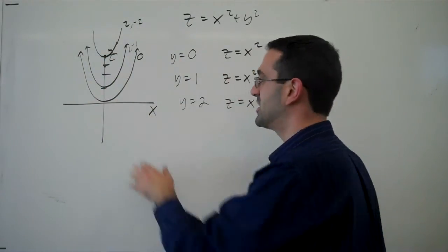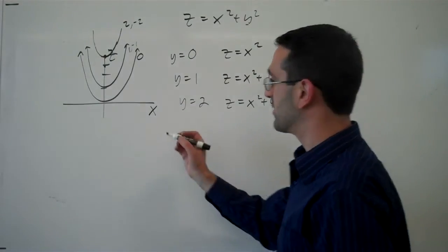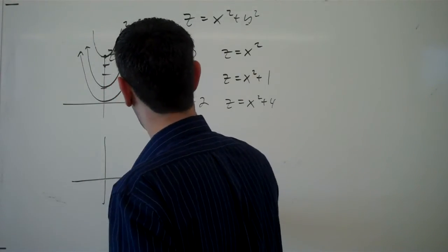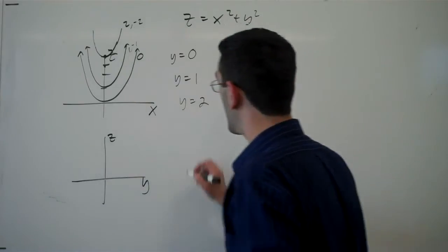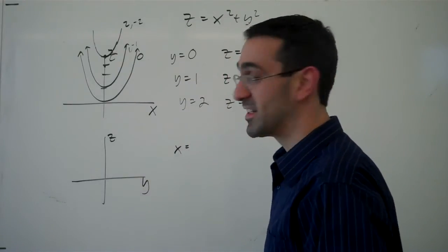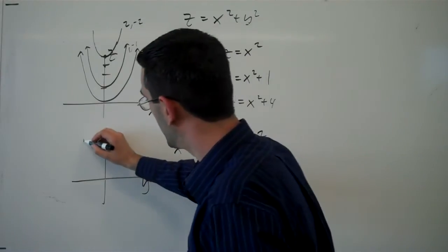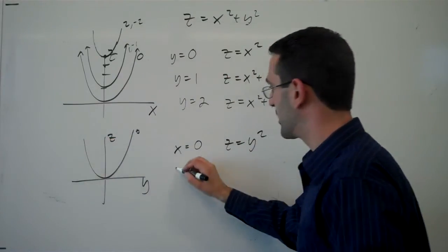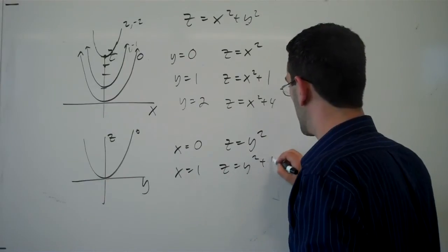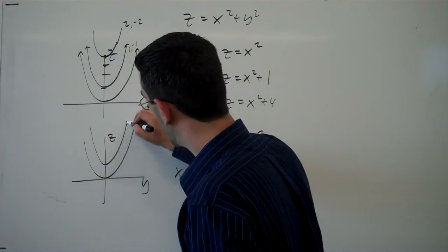Still kind of hard to see what's going on. So we might look at it from a different direction. So if we look at y and z, then we can let x equal a constant. And if x equals 0, z would be y squared, and we're going to get a shape like that. If x equals 1, we're going to get y squared plus 1.